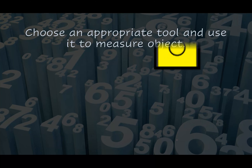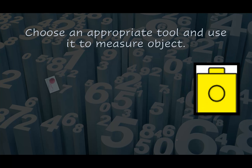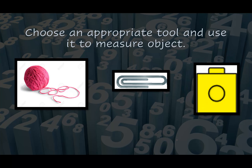I want you to take cubes, a string, and a paperclip with you. In this lesson we will be using these three objects. Here it says 'choose an appropriate tool and use it to measure an object.' You have to choose which tool will be best to measure a given object and then measure with it. Quickly take a string or a piece of yarn, a paperclip, and a cube.